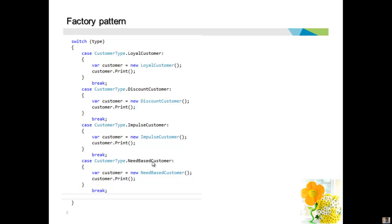But if you look at this code, there are two issues. First, you will find a lot of scattered `new` keywords — and this may not just be in one file, it could be spread across various files throughout the system. Second, if you wanted to add one more type of customer tomorrow, you can't do it without informing the client applications — you need to update and recompile your client code. This means the client application must be aware of all the customer types.